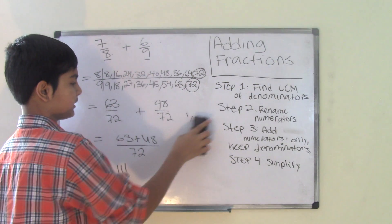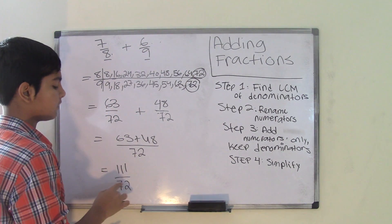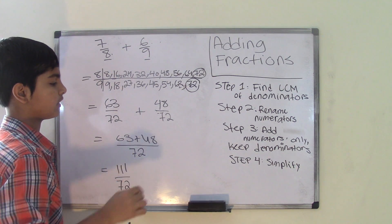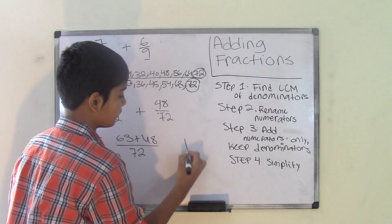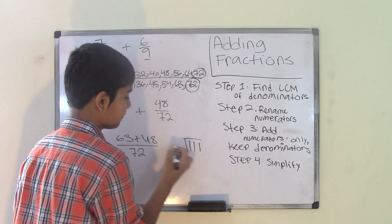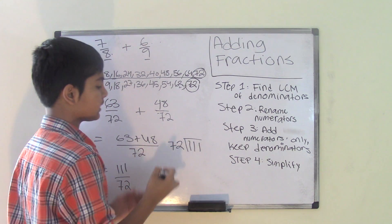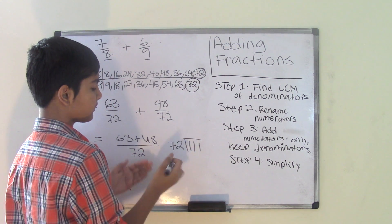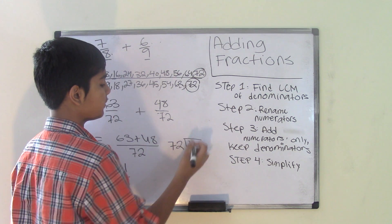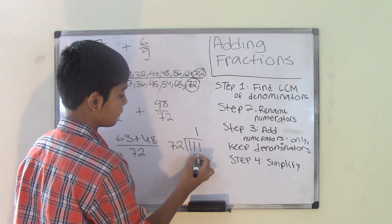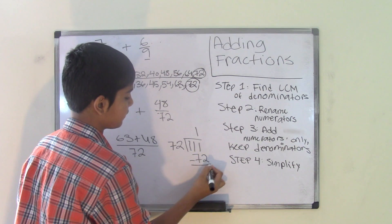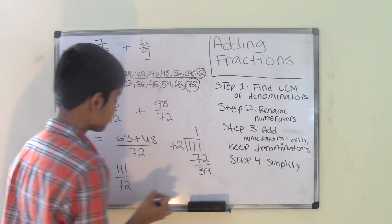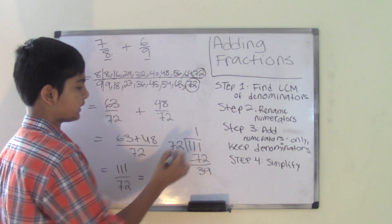We need to divide the numerator, which is the number 111, with the denominator, which is the number 72. So 111 and 72. The 72 goes into 111 one time. So 72.